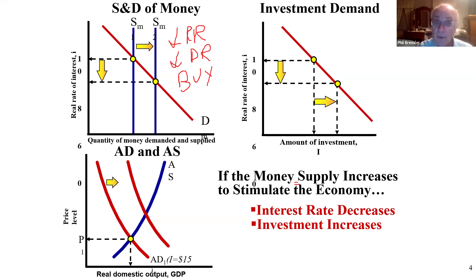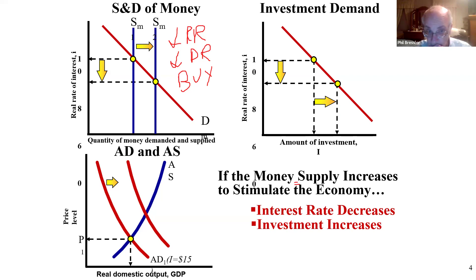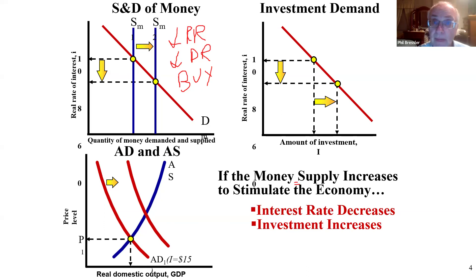Any time you lower any of the interest rates — the administered rate, interest on reserves, policy rate — investment increases and AD goes right.